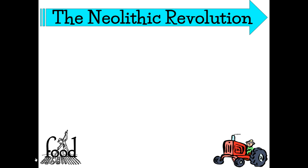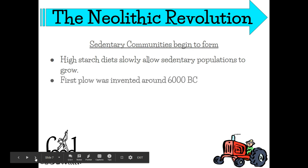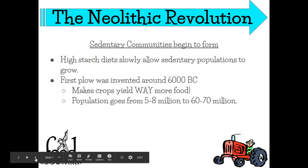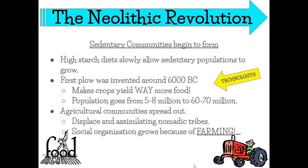Sedentary communities began to form. High-starch diets allowed a sedentary population to grow and flourish. The first plow was invented around 6,000 BCE, making growing and harvesting crops much easier and allowing the population to grow significantly. Because of the agricultural revolution, nomadic tribes began to be dispersed. The population grew from 5 to 8 million people all the way up to 60 to 70 million people because of this new shift in lifestyle. The agricultural community spread out and assimilated nomadic tribes into actual settled communities.